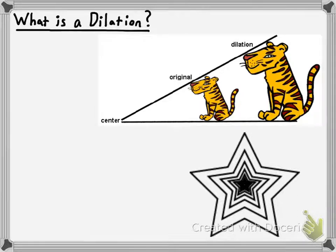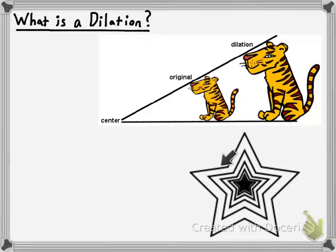One thing I need to stress is that a dilation is not an isometry. In the rest of the chapter we've been talking about isometries — those were transformations in which the pre-image and image were congruent. But clearly the pre-image and the image are not congruent here; the pre-image being the outer star and the image being the inner star. In dilations, the pre-image and image are similar figures.